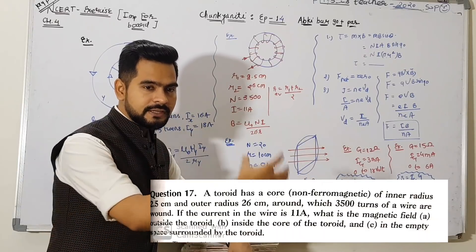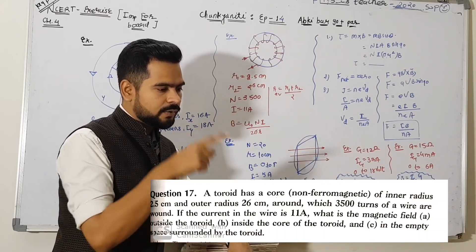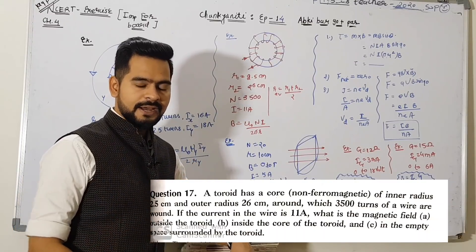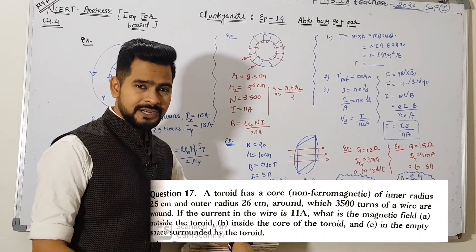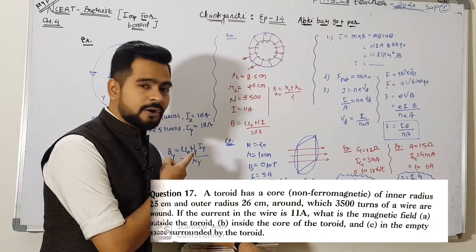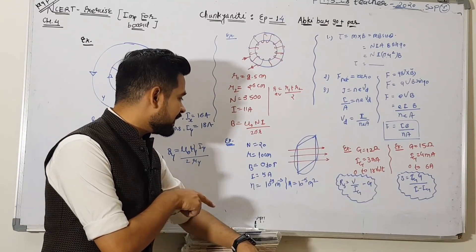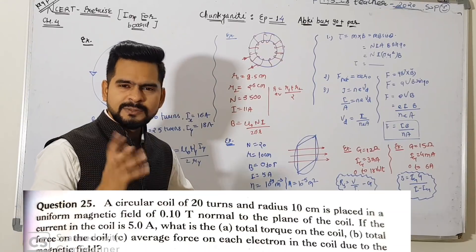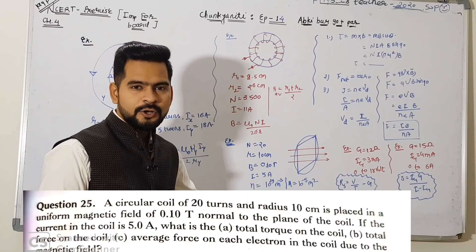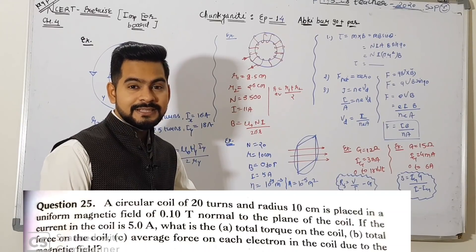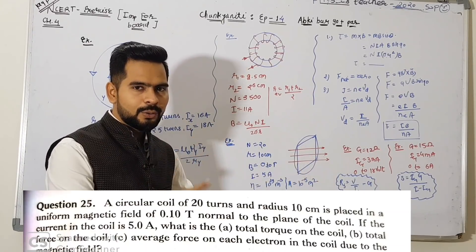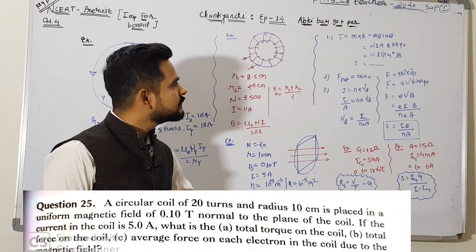Iske baad wale question mein aisa kya hai: aapke paas ek circular coil hai, uspe ek magnetic field hai - magnetic field jo circular coil ke plane ke perpendicular hai. Question mein number of turns, radius, magnetic field, current, number density, area - sab diya hua hai. Sabse pehle pucha: torque. Torque ka formula kya hai? τ = M × B, yani τ = NIA × B × sinθ. Theta is the angle between the area vector A and the magnetic field B. Area of circular coil = πr².